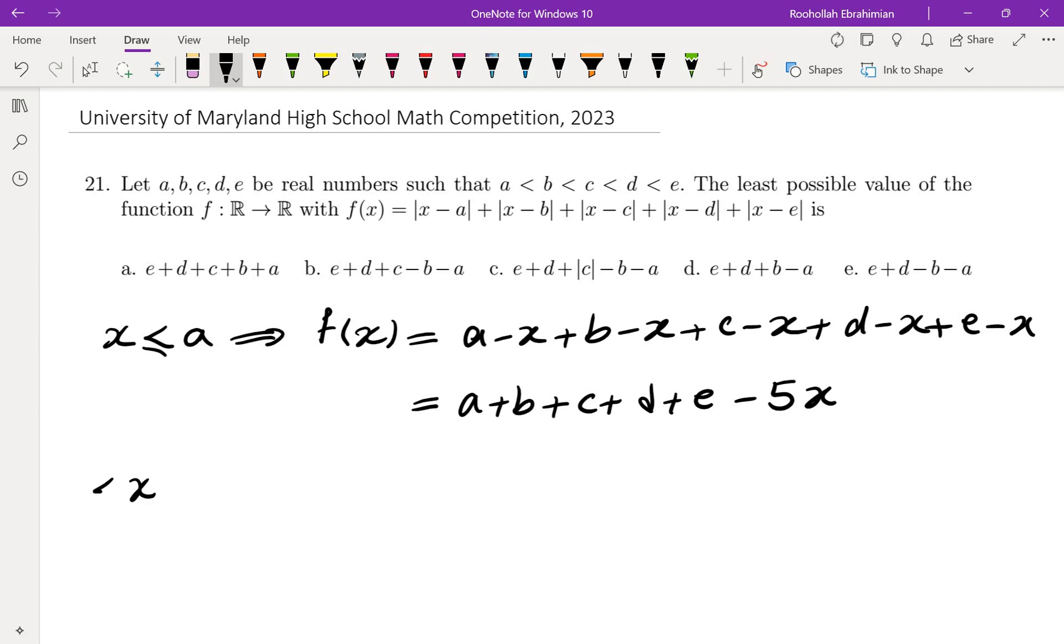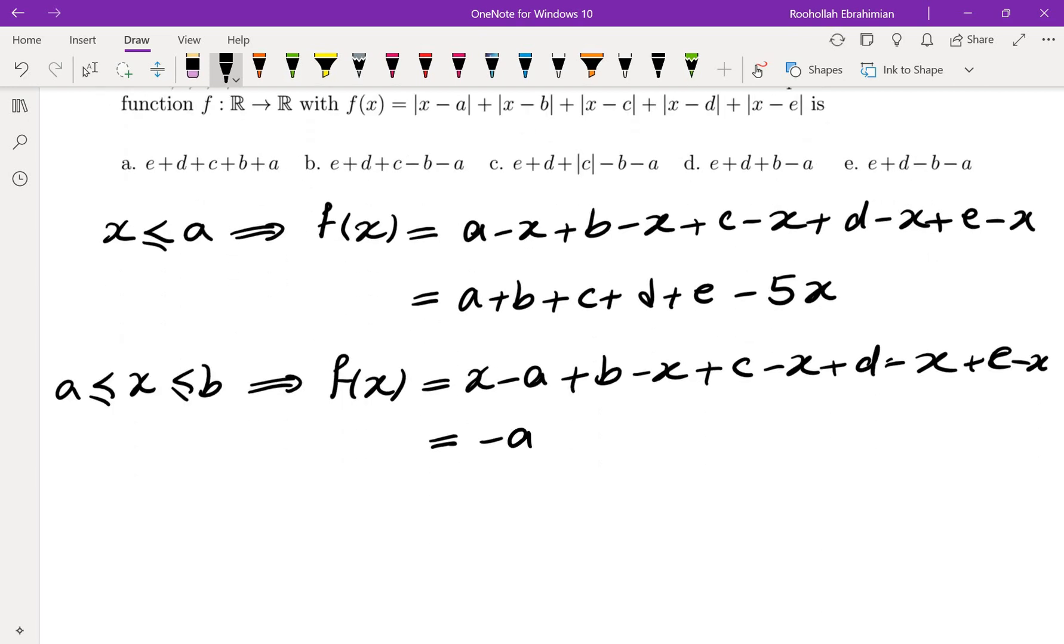Now let's assume that x is between A and B, and let's see what happens. So we're going to do the same thing. The very first term becomes positive, so we get x minus A. The rest of the terms are going to remain intact. And what we notice is that there's a constant,